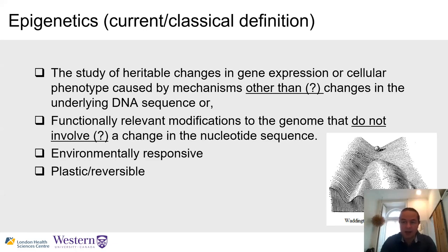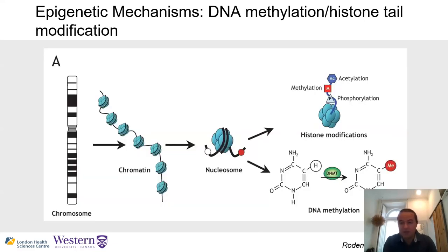Much of the epigenetic changes I'll describe are actually a direct result of underlying genetic changes. Epigenetic changes, unlike genetic changes, can be environmentally responsive and reversible. Two commonly studied mechanisms are histone modifications and DNA methylation — both act at the nucleosome level to enable chromatin formation. Most of my talk will focus specifically on DNA methylation: the addition of a methyl group to the fifth position of a cytosine by a methyltransferase enzyme.